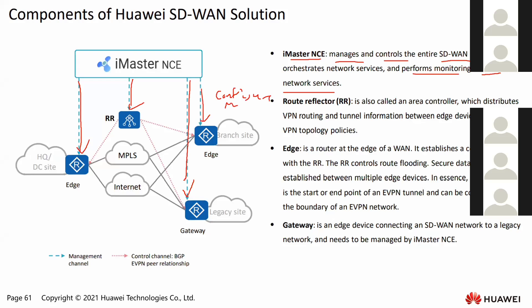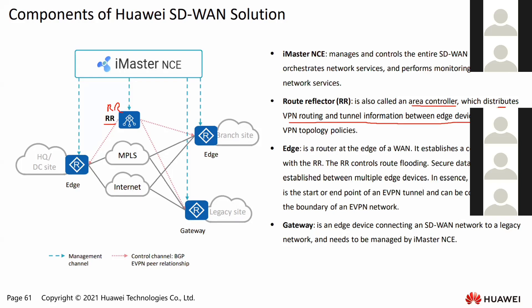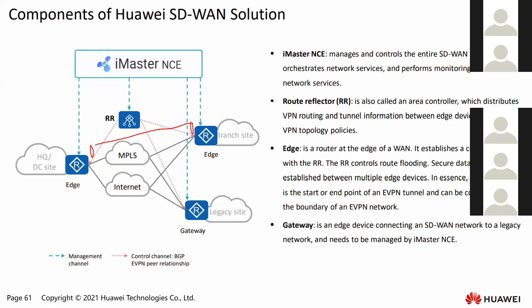Next is the Route Reflector, also called the Area Controller. The Route Reflector helps to distribute the VPN routing and tunnel information between H devices. Our H devices will advertise VPN routing and tunnel information to the RR. Once the RR receives this information, it will reflect it to each H device, which will then start to establish the GRE over IPsec tunnel to each other.